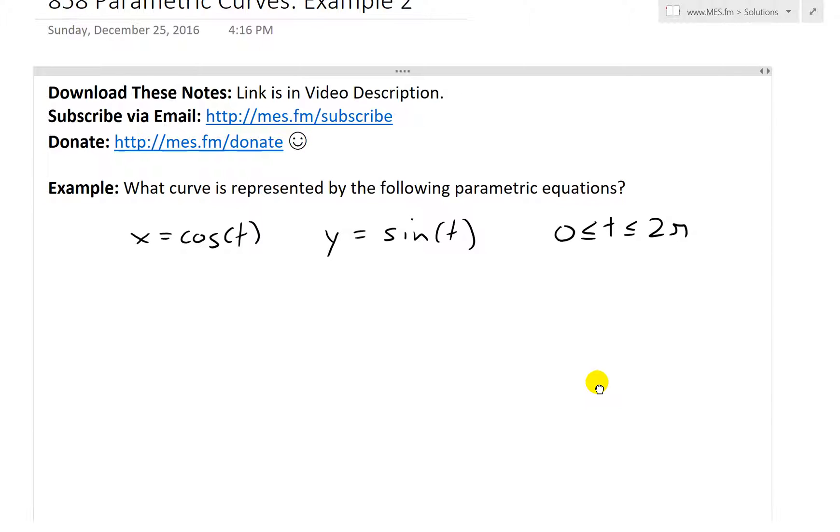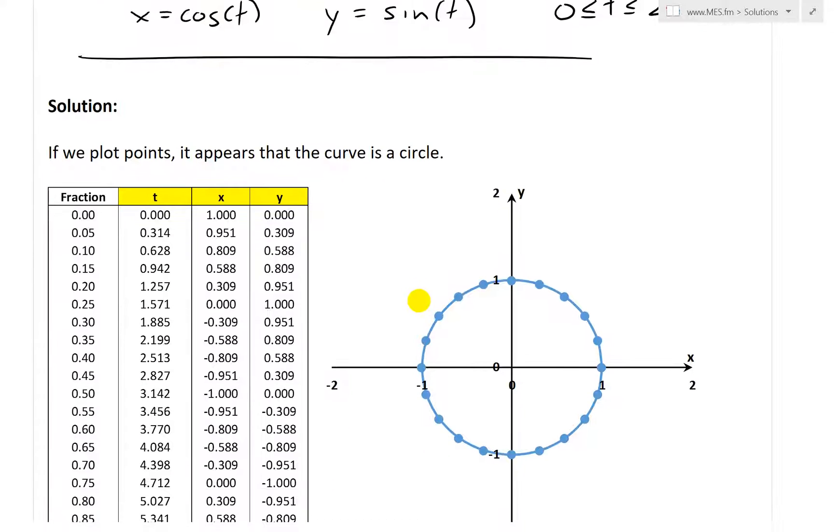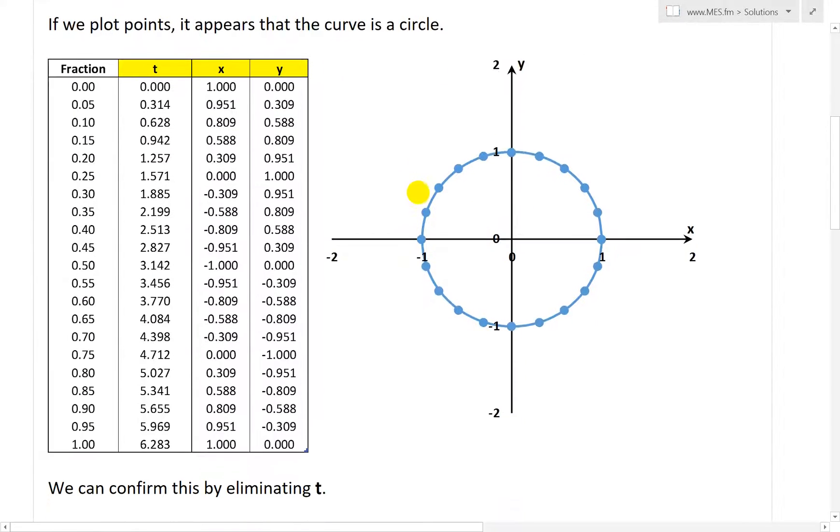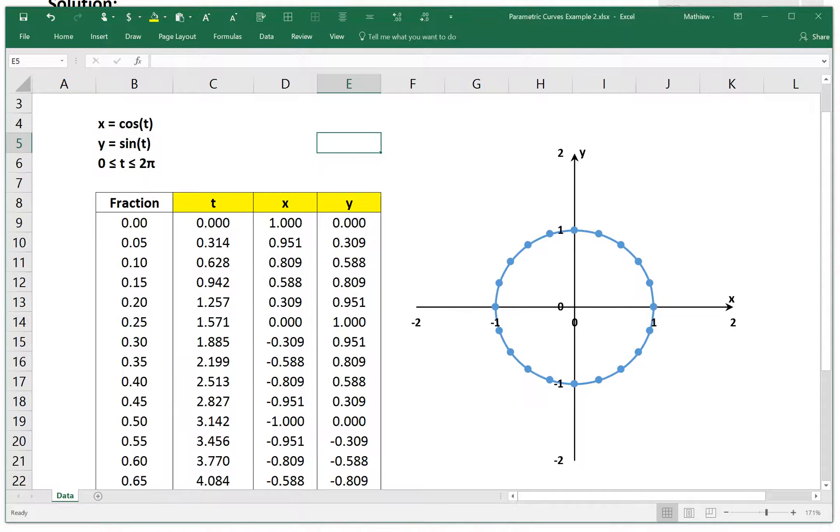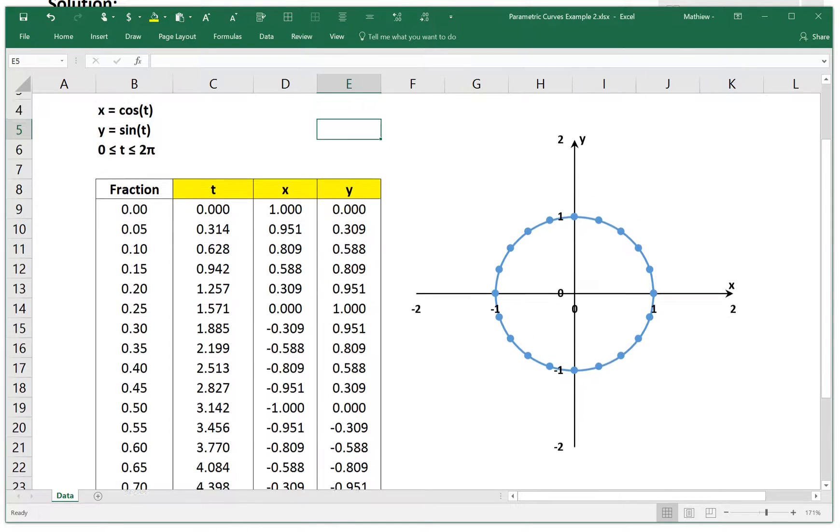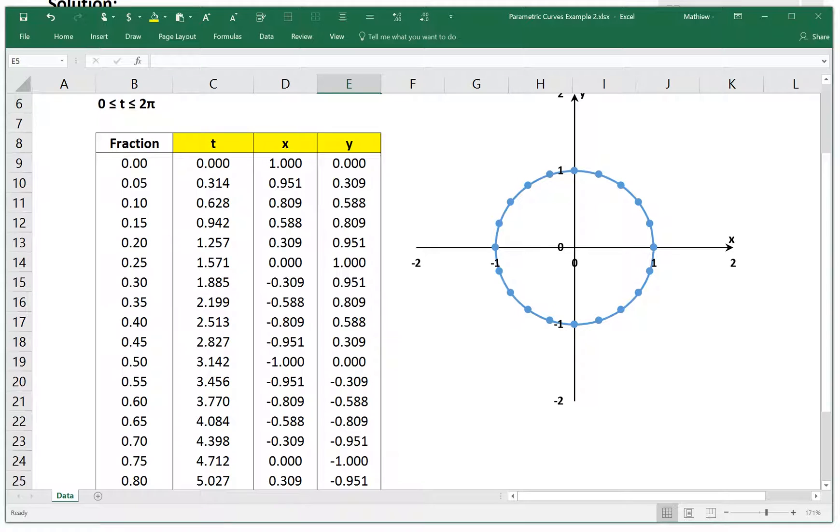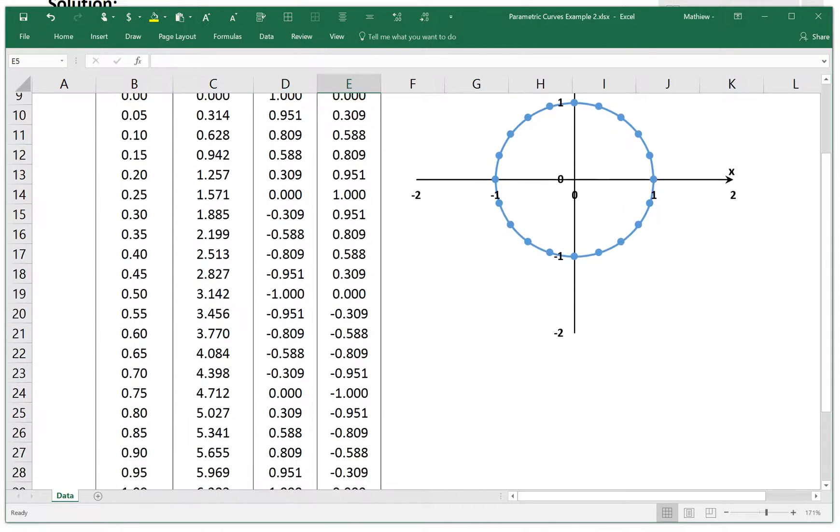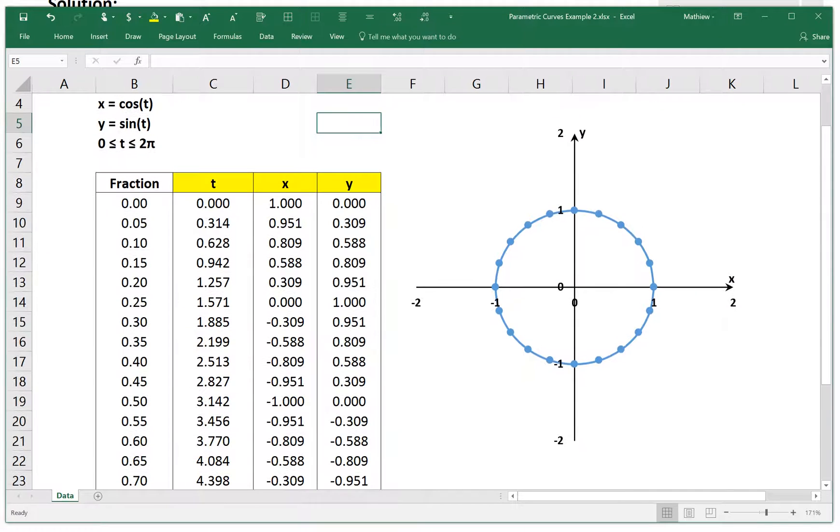So like always with these parametric equations, we have x and y as functions of a third parameter, in this case t. So here what I've done is, just looking at the solution, if we plot all the points, it appears that the curve is a circle. So here are the values, and I made an Excel sheet. You can download this. I'll put the link below. So what I've done here is I've set this column that states fraction.